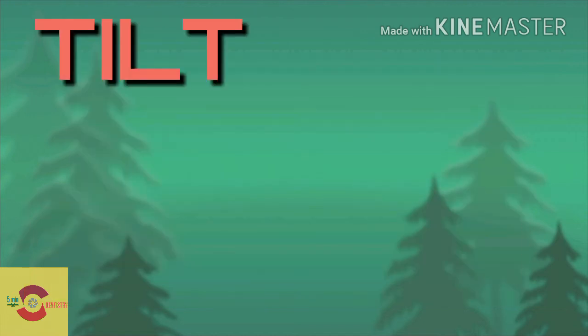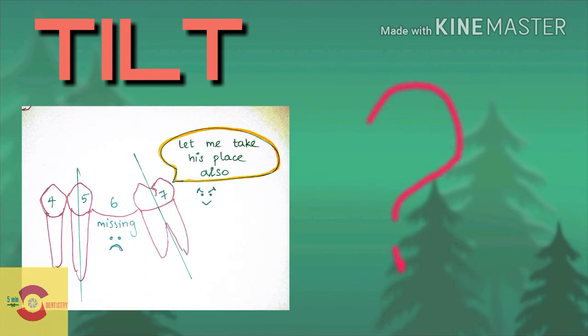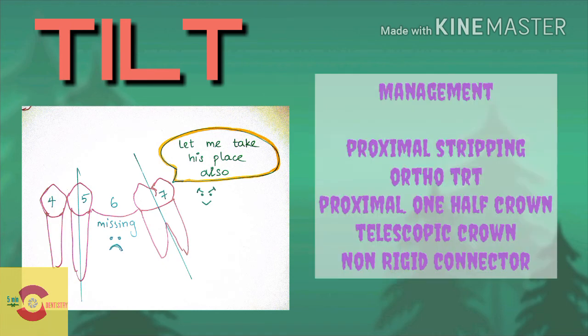Dealing with tilt — this could happen to any tooth adjacent to an edentulous space if not replaced for a long period of time. Management of tilt could be by proximal stripping, orthodontic treatment, proximal one-half crown, telescopic crown, or a non-rigid connector.